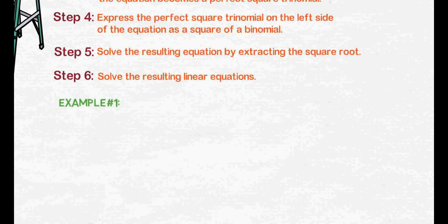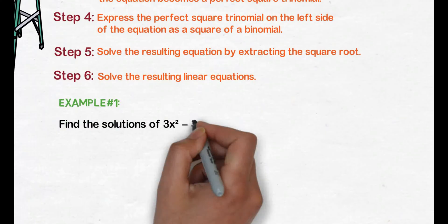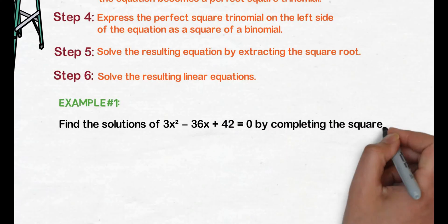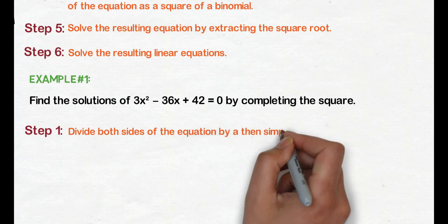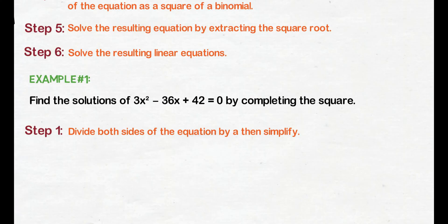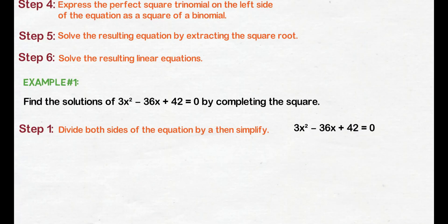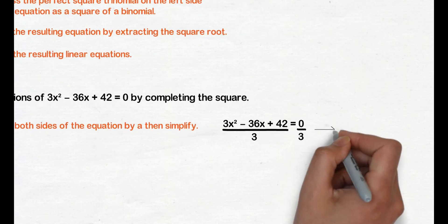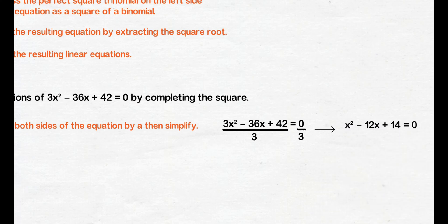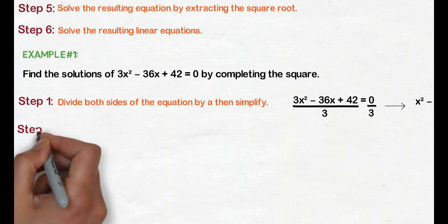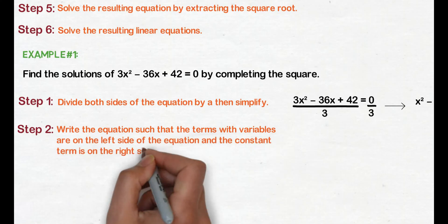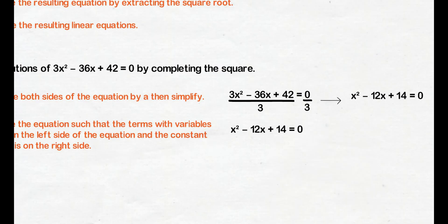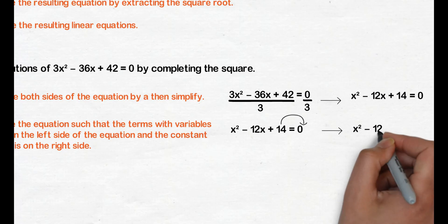Example number 1: find the solutions of 3x square minus 36x plus 42 equals 0 by completing the square. Step 1: divide both sides of the equation by a, then simplify. Ang value ng a natin dito ay 3. Given the equation, divide natin both sides ng 3. Step 2: write the equation such that the terms with variables are on the left side and the constant term is on the right side. Transpose natin ang 14 sa right side. We get x square minus 12x equals negative 14.